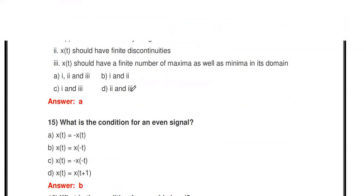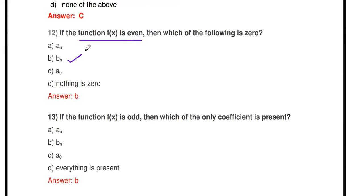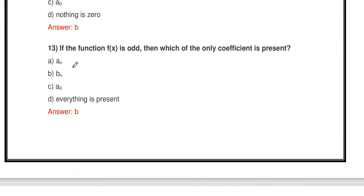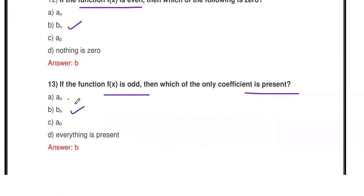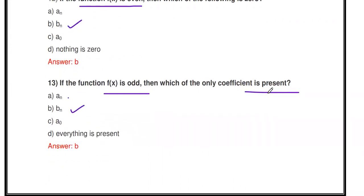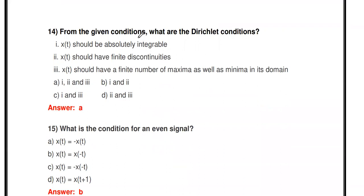If the function is even, the bₙ coefficient is zero — meaning no sine terms. Similarly, if the function f(x) is odd, then which coefficient is present? The bₙ coefficient is present. If the signal is even, there are no sine harmonics; if the signal is odd, only the bₙ coefficient is present.